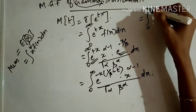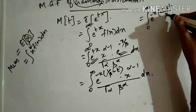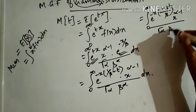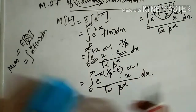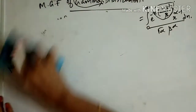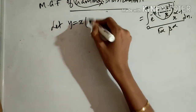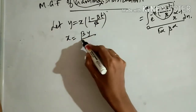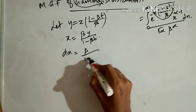Taking the LCM, this becomes the integral from 0 to infinity of e^(-x(1 - βt)/β) times x^(α-1) divided by Γ(α) β^α dx. We can consider this exponent term as a substitution: let y = x(1 - βt)/β, so that x = βy/(1 - βt).